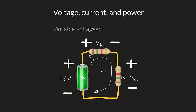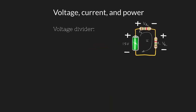KVL is like going on a hike up a mountain: if you start at one spot, go up to the peak, and come down a different path ending at the same spot, your net potential energy change is zero. So the sum of all potential drops across each element equals zero. But that doesn't tell us how to find the voltage across each individual resistor — for that, we use a voltage divider.